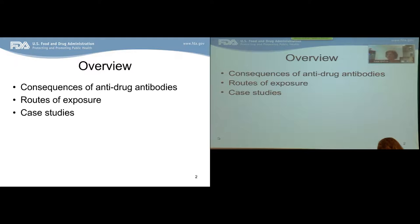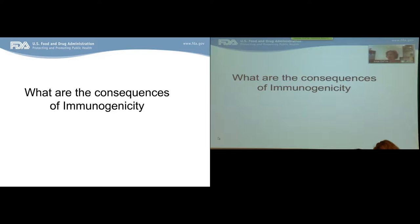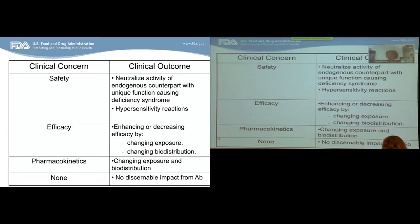I'm going to give you a high-level overview of the consequences of anti-drug antibodies, then talk about different routes of exposure — not so much their impact on immunogenicity, but an overview of those routes and case studies about how various routes of exposure have impacted immunogenicity. The first issue is: what are the consequences of immunogenicity, and why do we care? The answer is that immunogenicity to therapeutic proteins has impacted clinical development, safety, and efficacy.